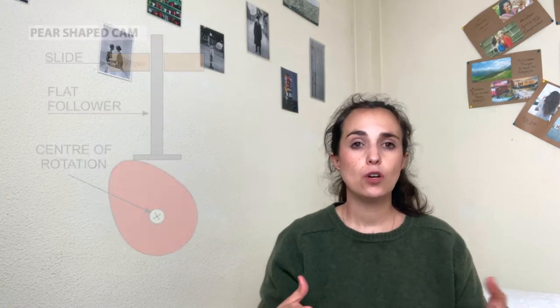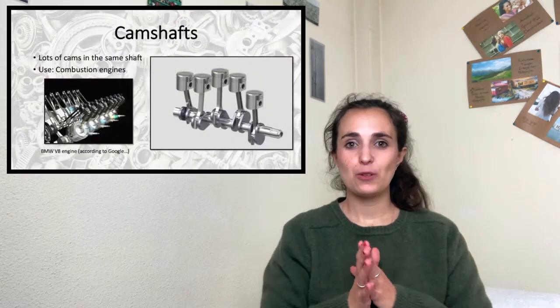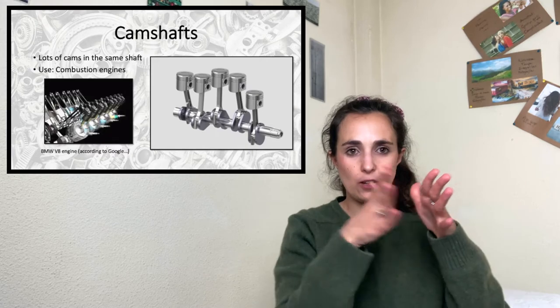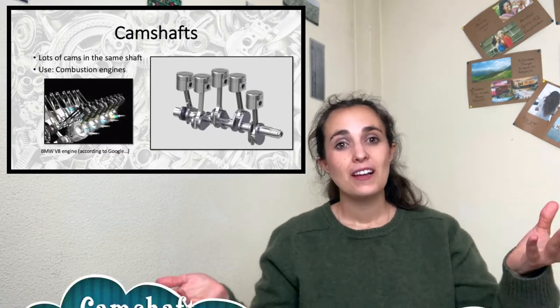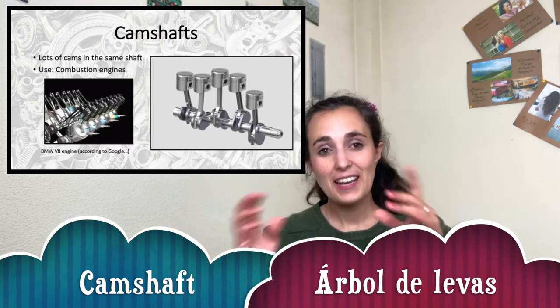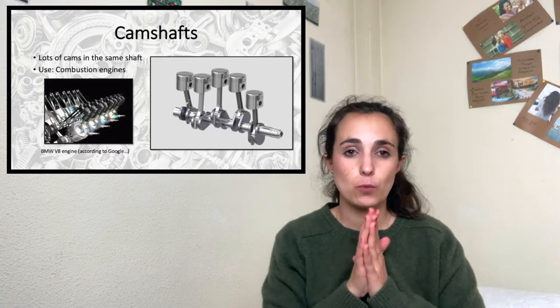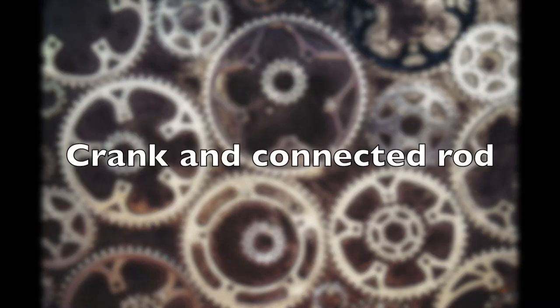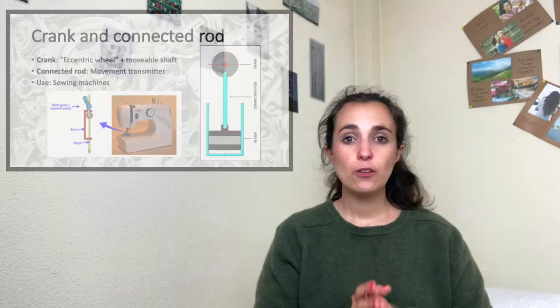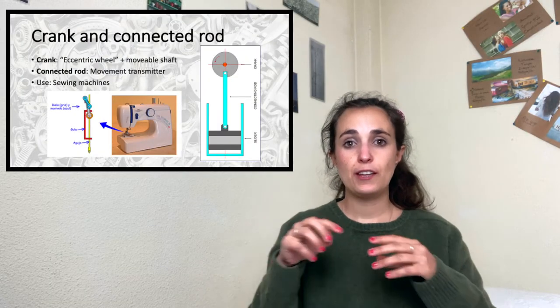The main use of these mechanisms is in valves. Just for fun, I wanted to show you an example of an automaton that uses this type of mechanism. Usually, cams and eccentric wheels are not used alone — they are used in compound objects with lots of cams on the same shaft, called camshafts. This is used in combustion engines, like in this example of a BMW V8 engine.